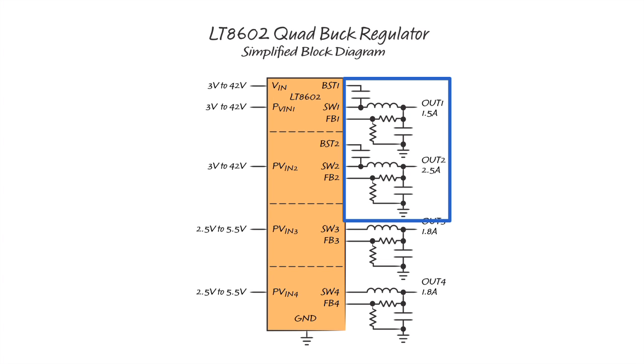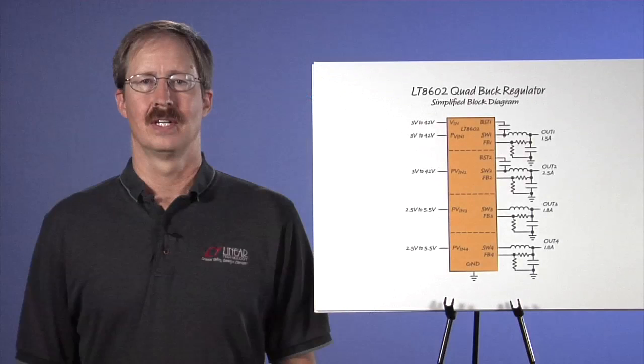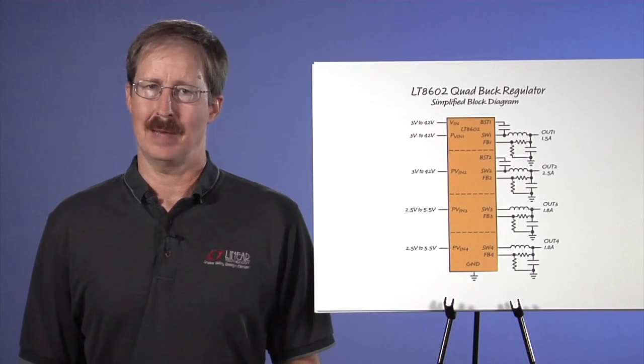The high voltage regulators provide output currents of 1.5 amps and 2.5 amps. Both low voltage regulators provide up to 1.8 amps of output current. Let's look at the 8602 in a lab setting.